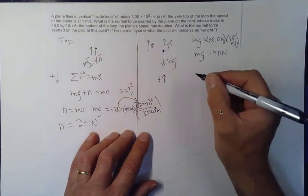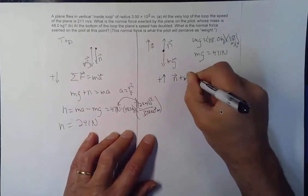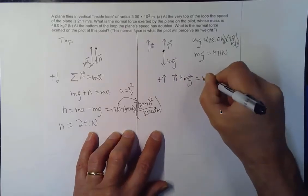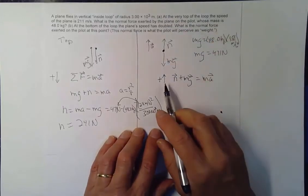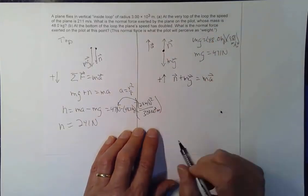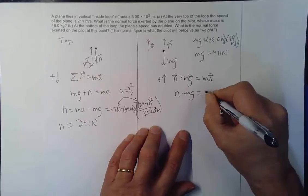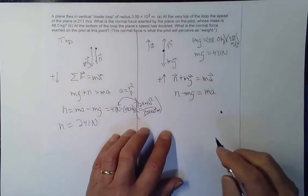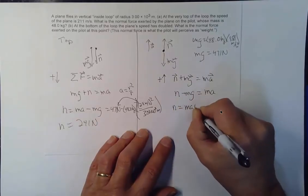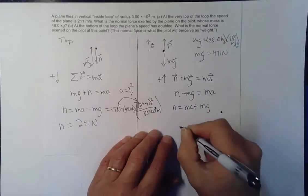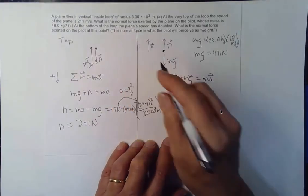And Newton's second law in vector form here will be N plus MG is equal to MA in scalar form. Since this is all in one same direction. If it's positive it's up. If it's negative or if it's down it's negative. So N minus MG is going to equal MA. So the normal force in this case is equal to MA plus MG. And we'll find out. It does say they're going twice as fast at the bottom. The speed has doubled.